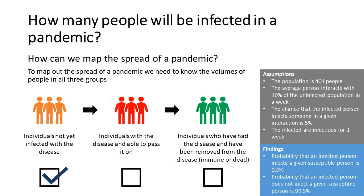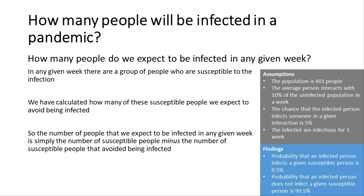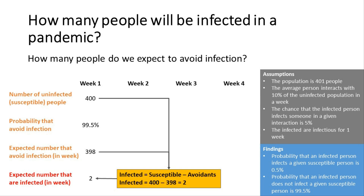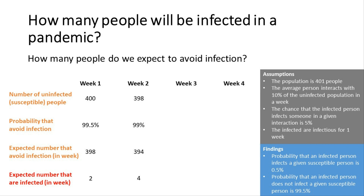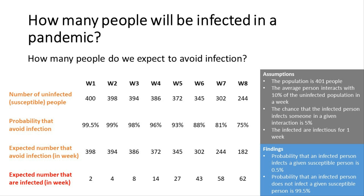Now, how many people do we expect to be infected in any given week? In any given week, susceptible people are either going to be infected or not. The number expected to be infected is simply the total number of susceptible people minus the number that avoided infection. In week one: 400 susceptible minus 398 avoidance equals 2 infected. In week two: 398 susceptible minus 394 avoidance equals 4 infected. Over four weeks and out to week eight, the expected number getting infected grows quite steeply week on week, but starts to level out by about week eight.